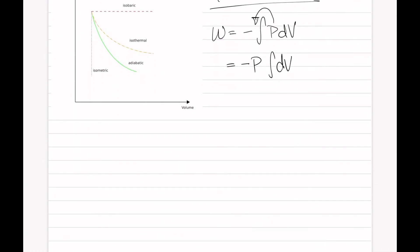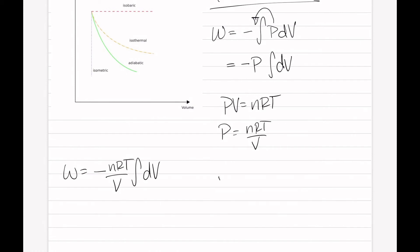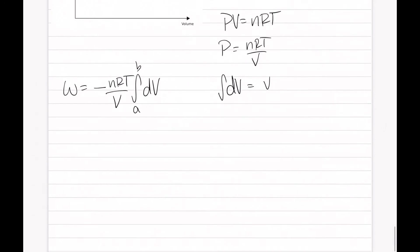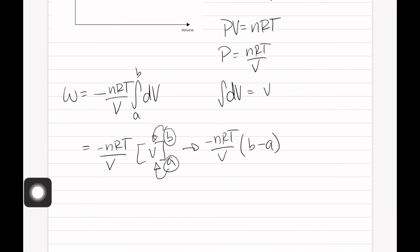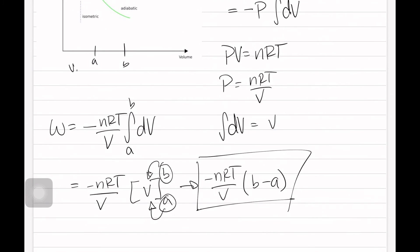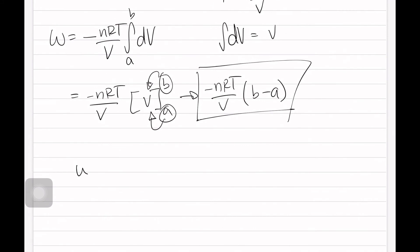We can write P in terms of volume based on the ideal gas law: P equals nRT over V. So work is equivalent to negative nRT over V times the integral of dV. The integral of dV is simply V. Going from lower limit A to upper limit B, this gives us negative nRT over V times V, evaluated from A to B, which yields negative nRT over V times (B minus A). Substituting Vi and Vf, work equals negative nRT over V times (Vf minus Vi).